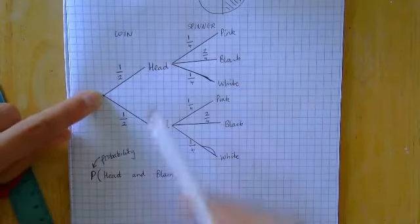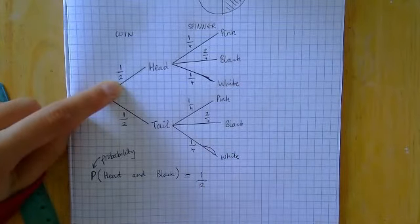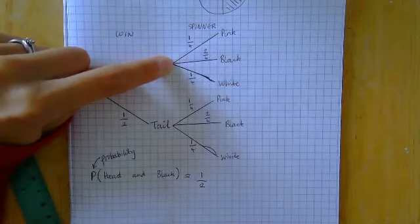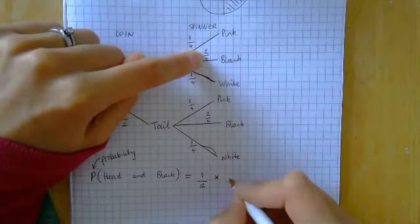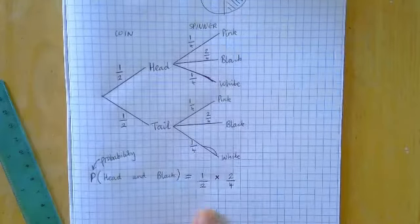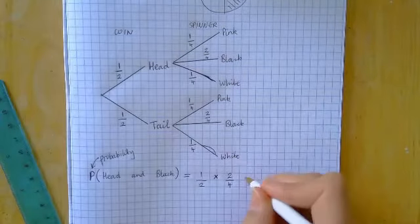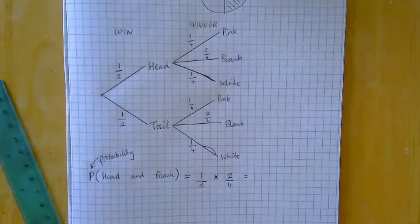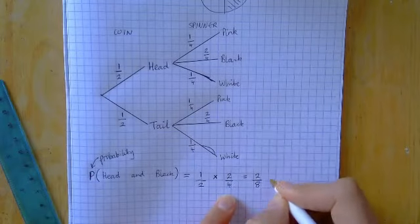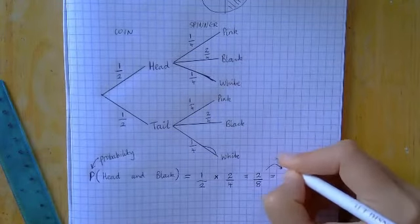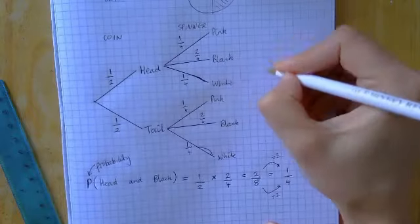That's the rule you've got to remember. Let's find the probability of getting a head and a black. We want a head, so we walk along the head branch, which has a half on it. Then we want black, so we walk along the black branch, which has two over four. We multiply along the branches: one half times two over four. Multiply the top numbers — one times two is two — and multiply the bottom numbers — two times four is eight — giving two over eight. Simplify by dividing top and bottom by two, which gives one over four. So that's our answer.